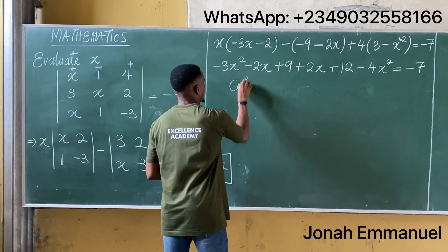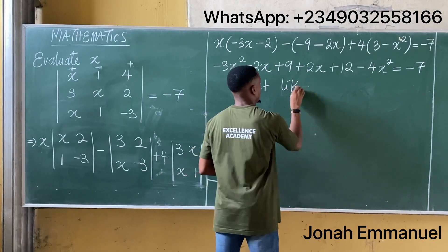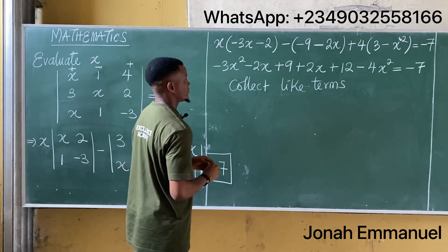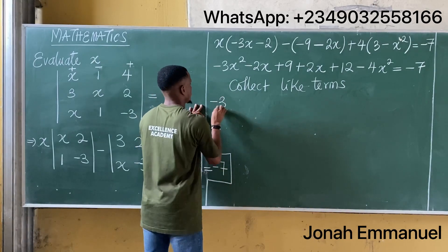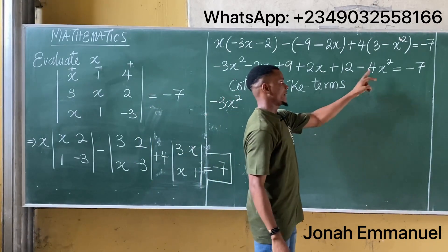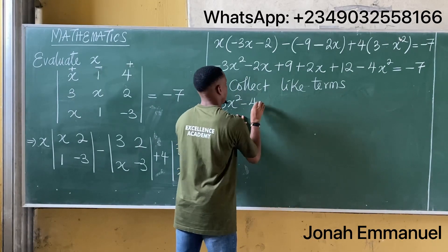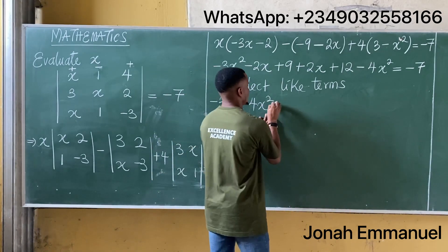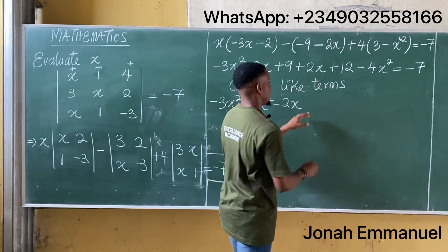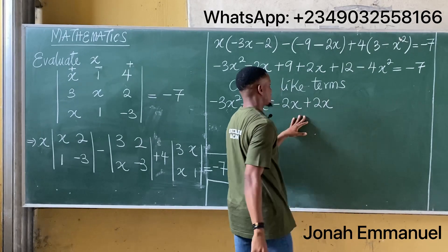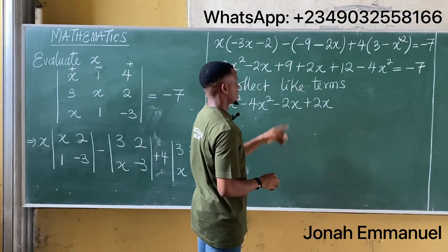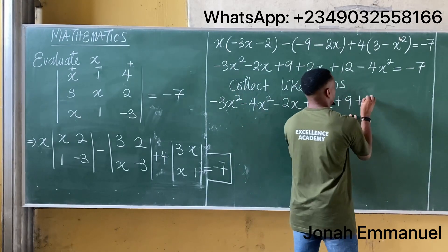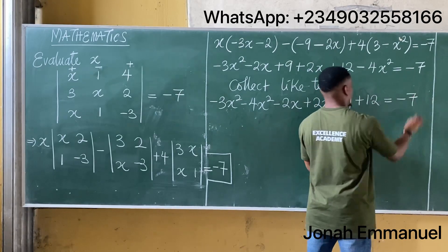My next task is to collect like terms. Taking the x squared terms: minus 3x squared and minus 4x squared. Taking the x terms: minus 2x and plus 2x. Taking the constant terms: plus 9 and plus 12. All equal to minus 7.